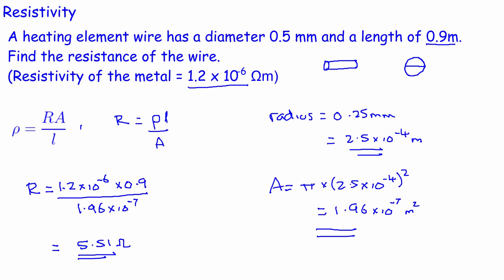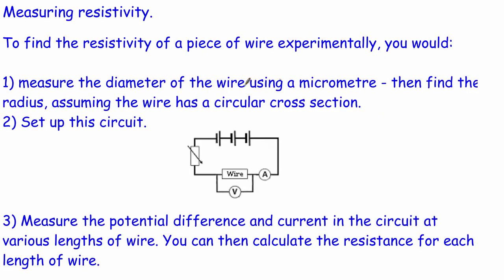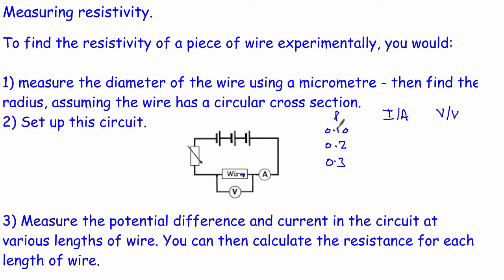The second type of exam question involves describing how you would measure resistivity experimentally. First, measure the diameter of the wire using a micrometer, then find the radius from that. Set up a circuit with your wire, an ammeter, and a voltmeter across the wire. Measure the potential difference and current for various lengths of wire — for example at 0.1 metres, 0.2 metres, 0.3 metres — building up a table. You can then work out the resistance for each length by dividing voltage by current.